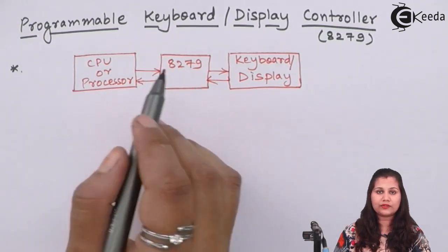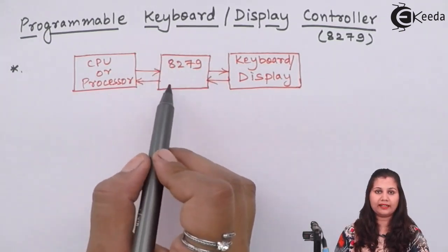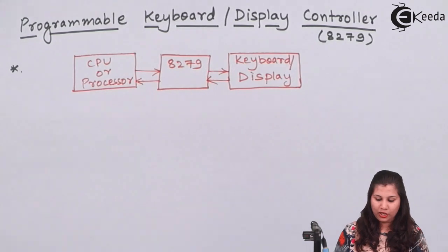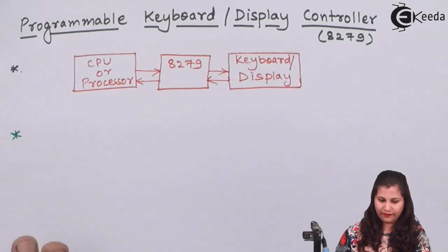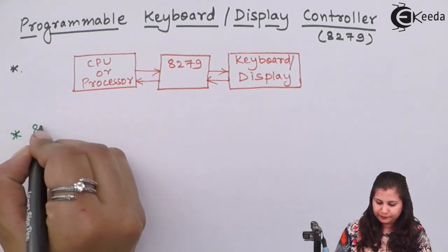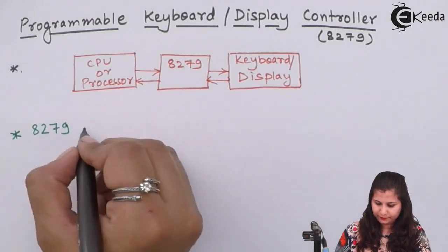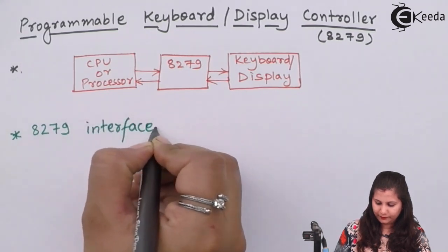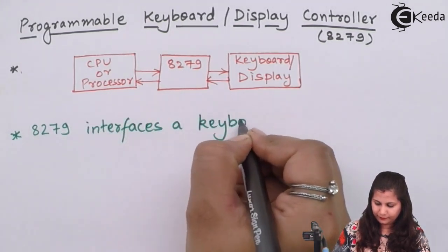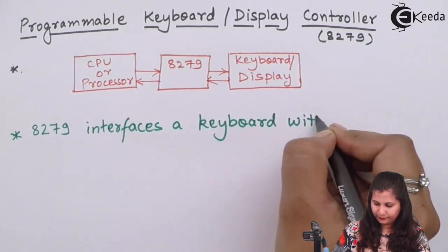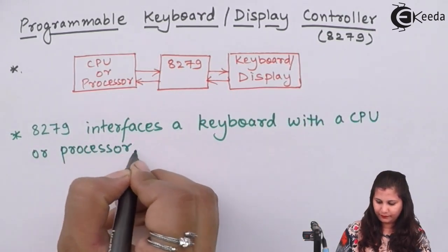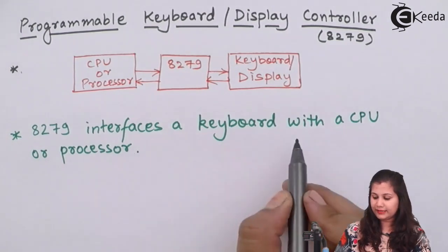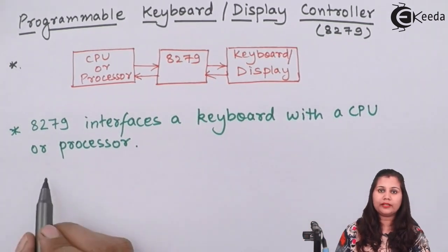Any transfer of data will take place via this 8279. So the programmable keyboard display controller 8279 interfaces a keyboard with a CPU or processor.